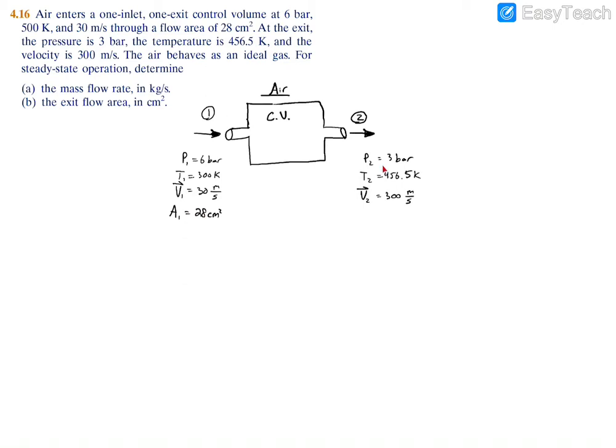Meanwhile, at the exit, we're given a pressure of 3 bar, a temperature of 456.5 Kelvin, and an exit velocity of 300 meters per second. Now, one other thing you're told is that the air can be treated as an ideal gas. So the relation PV equals NRT or PV equals MRT is valid.